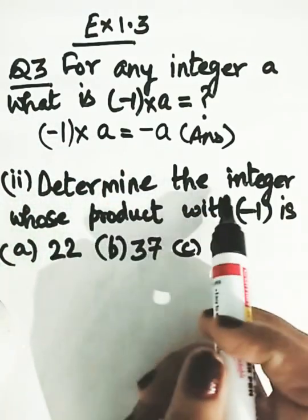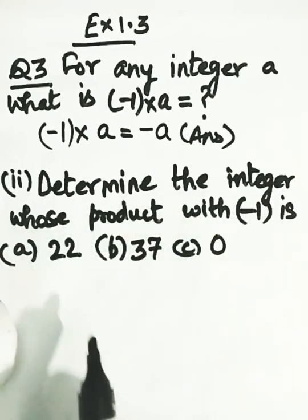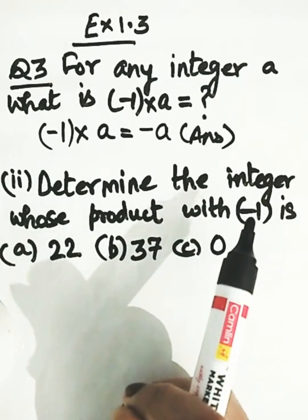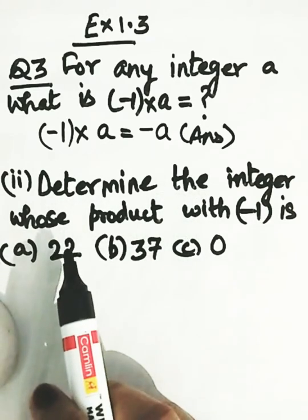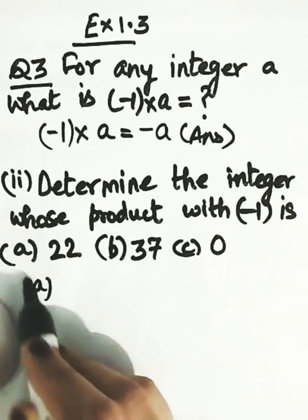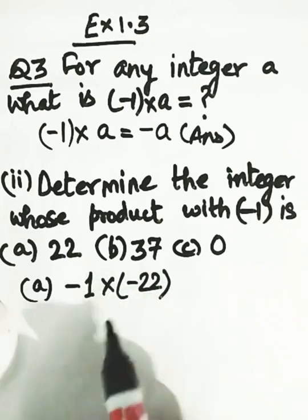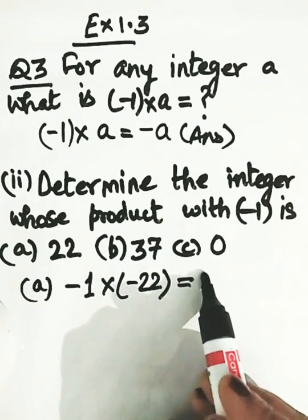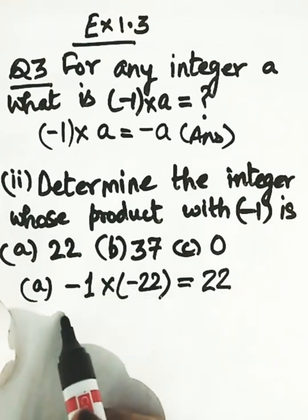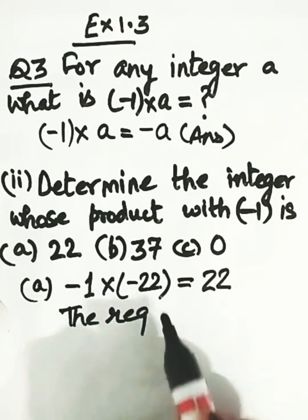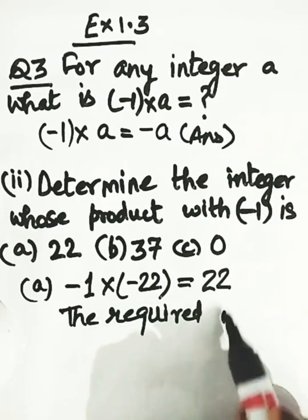Second part of this question: determine the integer whose product with minus 1 is 22. So here we are asked which integer, when multiplied by minus 1, gives 22. If we multiply minus 1 by negative 22, minus times minus gives positive, and 22 ones are 22. So the required integer is minus 22.